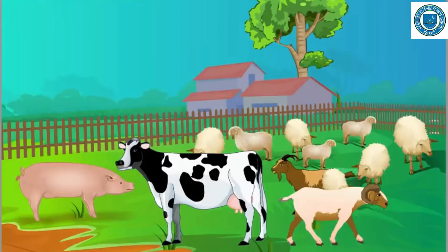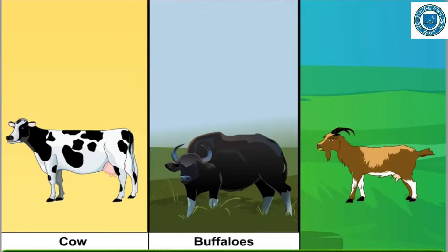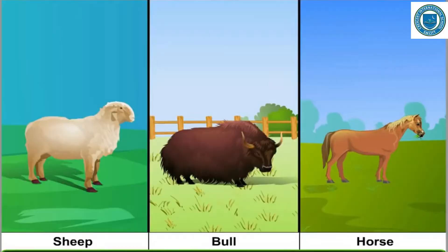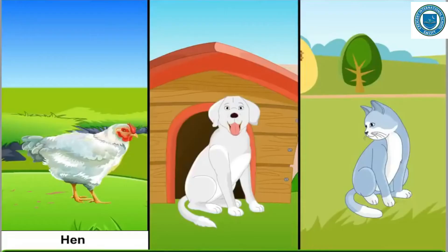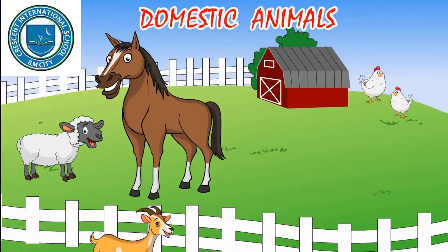We can see only farm animals or domestic animals around us, but we may see some wild animals in the zoo. Some animals live in farms, fields, and houses — they are called domestic animals. They need humans for food, water, shelter, and care. For example: cow, buffaloes, goats, sheep, bull, horse, donkey, camel, parrot, hen, dog, cat, and so on.